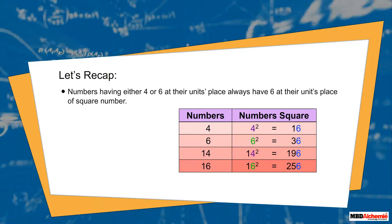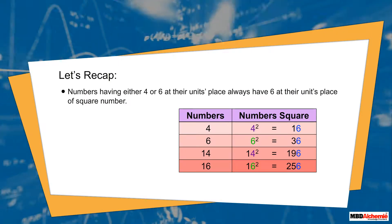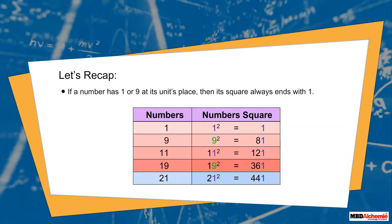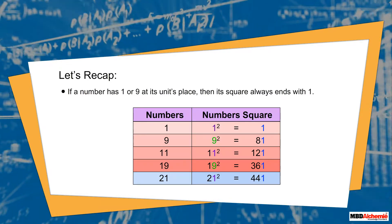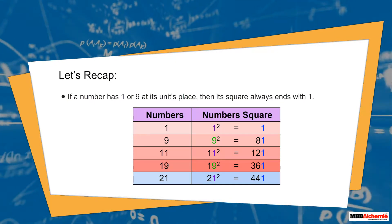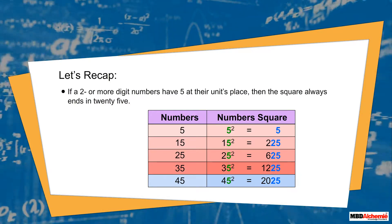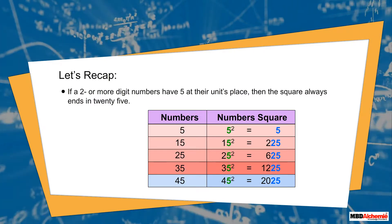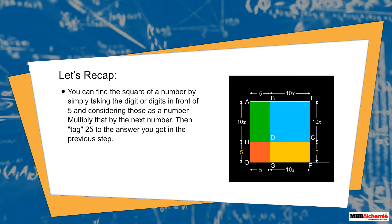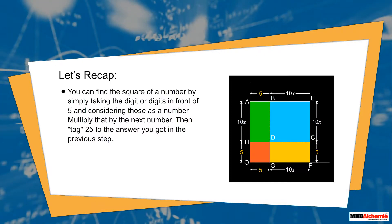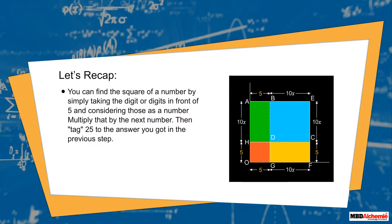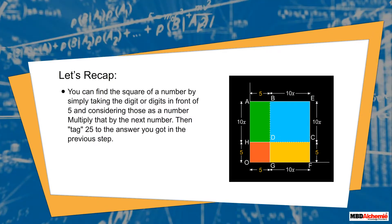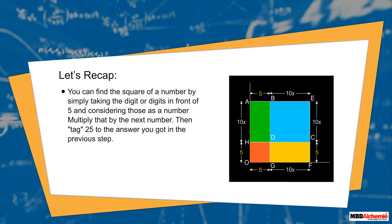Numbers having either 4 or 6 at their unit's place always have 6 at their unit's place of the square number. If a number has 1 or 9 at its unit's place, then its square always ends with 1. If a two or more digit number has 5 at its unit's place, then the square always ends in 25. You can find the square by taking the digit or digits in front of the 5 and multiplying that with the next number, then tagging 25 to the result.